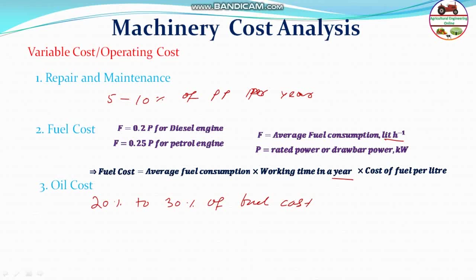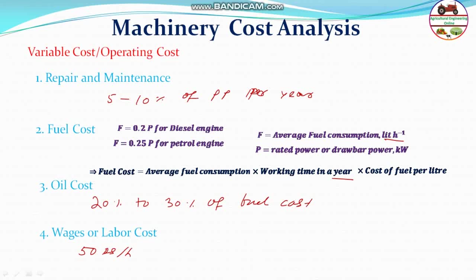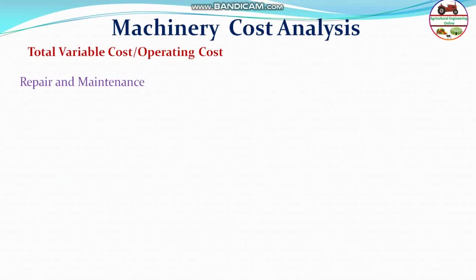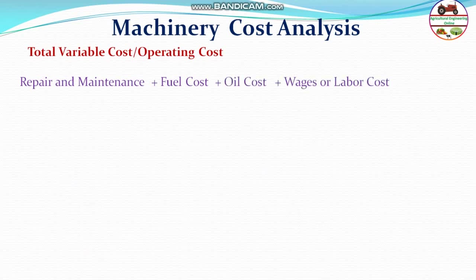Next is the oil cost. Generally, oil cost is around 15 to 20%, or sometimes 20 to 30%, of the fuel cost. This is added to the variable or operating cost. Next is the wages or labor cost. The machine or tractor has to be operated by some labor or operator, so you have to pay the wage to the labor. The number of laborers depends on the machine — if it is a multi-labor machine, you take two or three laborers as required. Labor cost depends on the machine; on a flat basis, 50 rupees per hour is taken. Total variable cost equals repair and maintenance cost plus fuel cost plus oil cost plus labor/wage cost.